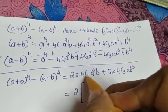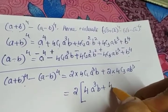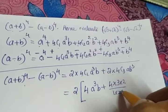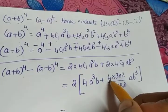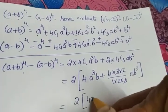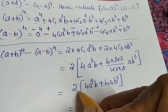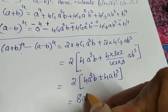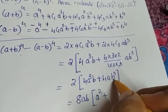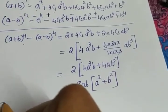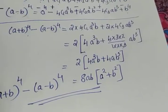So the result equals 2 common. What is 4C1? It is 4, giving 4a³b. And 4C3 equals 4C1, which is also 4 — computing it: 4×3×2 ÷ (1×2×3) = 4, giving 4ab³. The two terms inside the bracket are 4a³b and 4ab³. Taking 4ab as common from the bracket, we get 2 × 4ab × (a² + b²), which is 8ab(a² + b²). So (a + b)⁴ − (a − b)⁴ = 8ab(a² + b²).